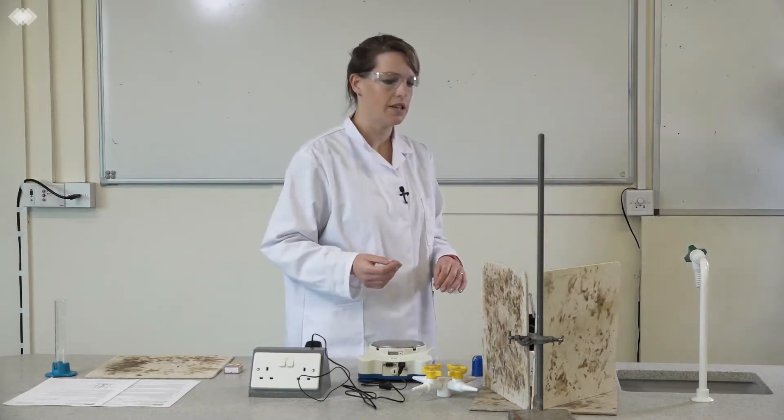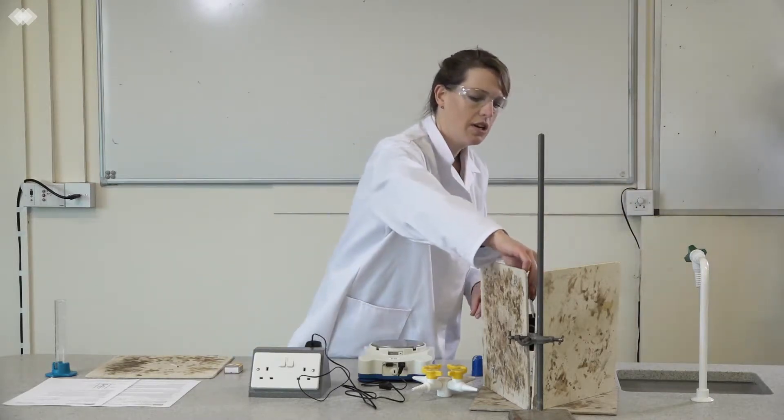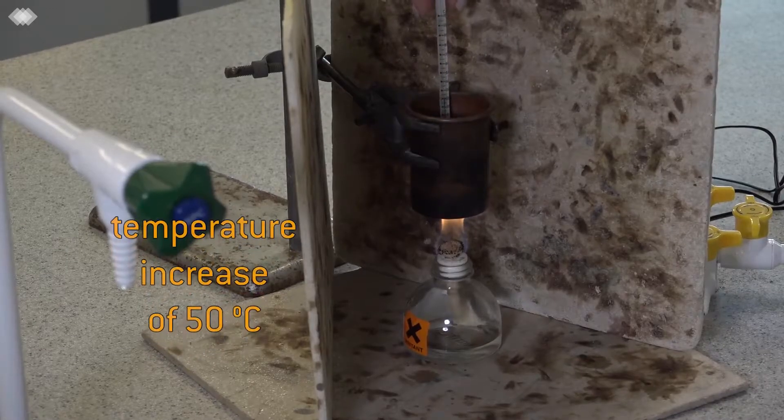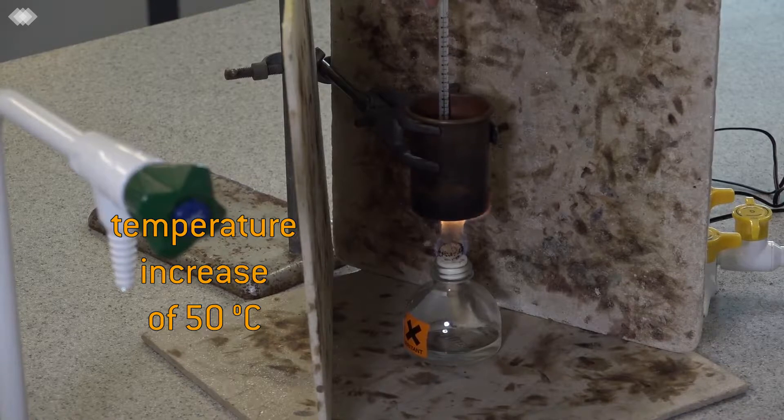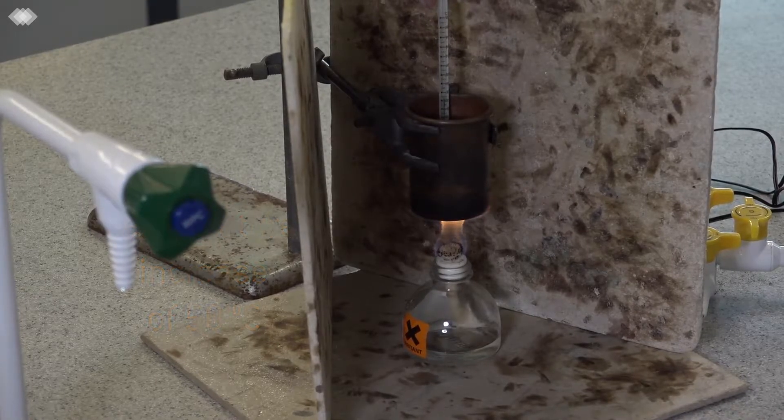Now you heat it until the temperature is increased by about 50 degrees. So if we've got a starting temperature of 20 degrees, we want to heat it until it gets to about 70 degrees.